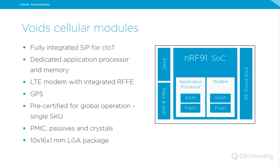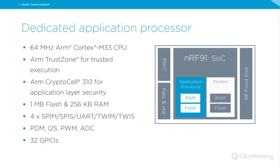The application processor is a fully programmable 64 MHz ARM Cortex-M33 with ARM TrustZone for trusted execution and ARM CryptoCell for application-layer security and root of trust. It has 1 MB of flash and 256 KB of RAM. I/O options include SPI master/slave, UART, two-wire master/slave — four interfaces in any combination — plus PDM, I2S, PWM, and ADC. It comes with 32 GPIOs.